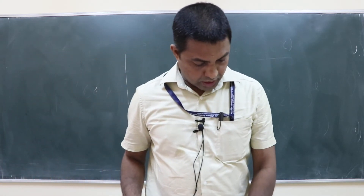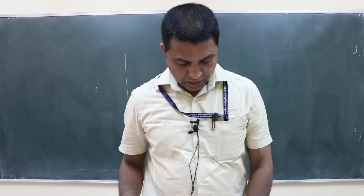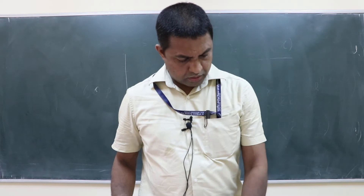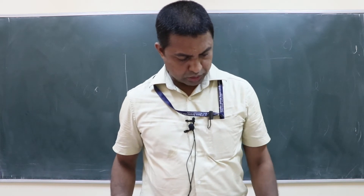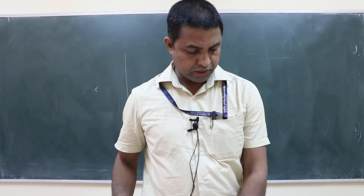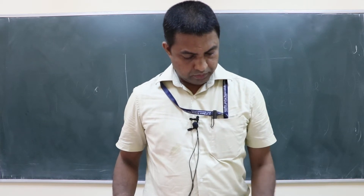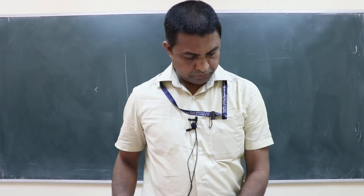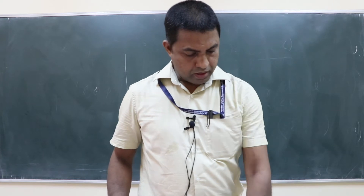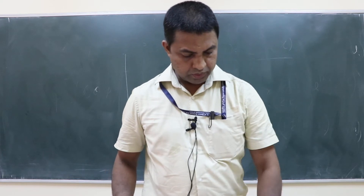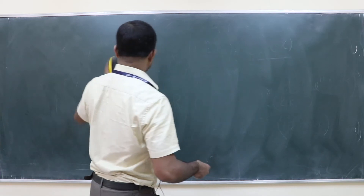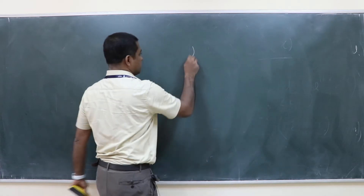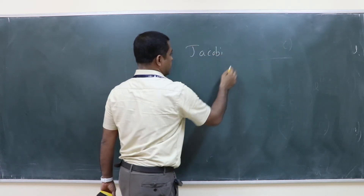Yesterday we were discussing the generalized Laguerre polynomial and we gave one specific example where it appears in physics — the hydrogen atom. Now let us look at the third class, which is the Jacobi polynomial.